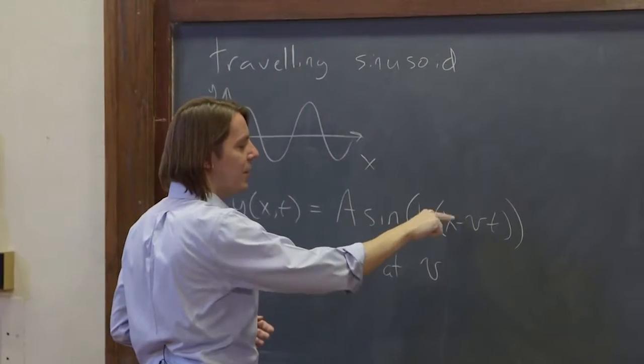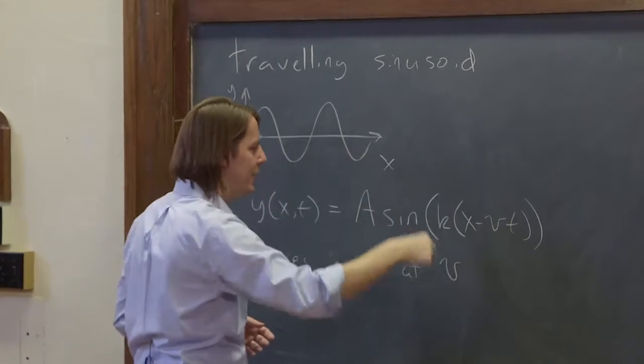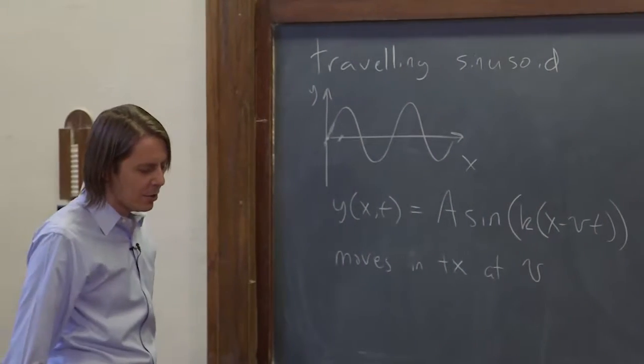You could also write sine of k times x plus vt. It would go the other way. So x minus vt goes positive x, x plus vt goes negative x.